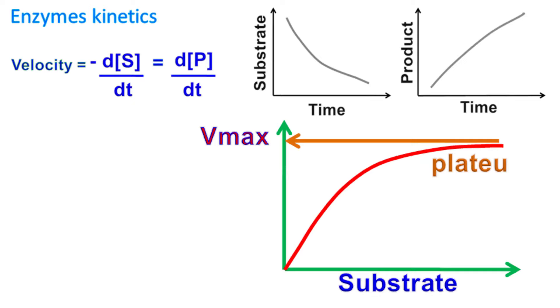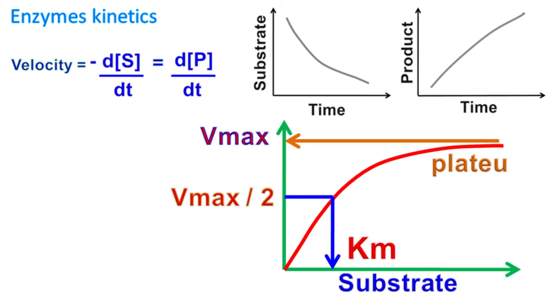Now let's divide Vmax by half and find the substrate concentration at which this is occurring. The substrate concentration at which half of Vmax is achieved is called Km. Remember, I again repeat, because lots of students make mistake when they are asked the definition of Km. Km is the substrate concentration at which half of Vmax is achieved.